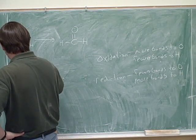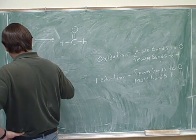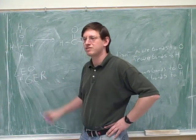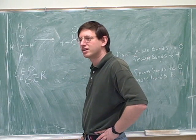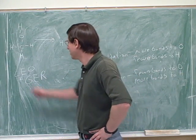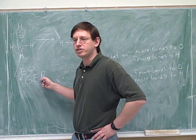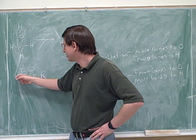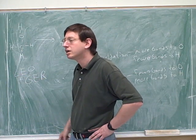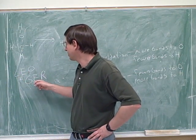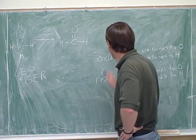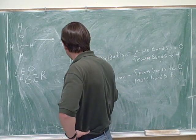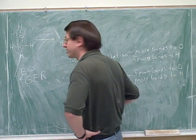It shouldn't be that hard. You guys have heard of LEO the lion, right? LEO goes GER. Do you guys remember what these stand for? Loss of electrons is oxidation, gain of electrons is reduction. LEO the lion goes GER. So oxidation would also mean that you're losing electrons, and reduction would also mean that you're gaining electrons.